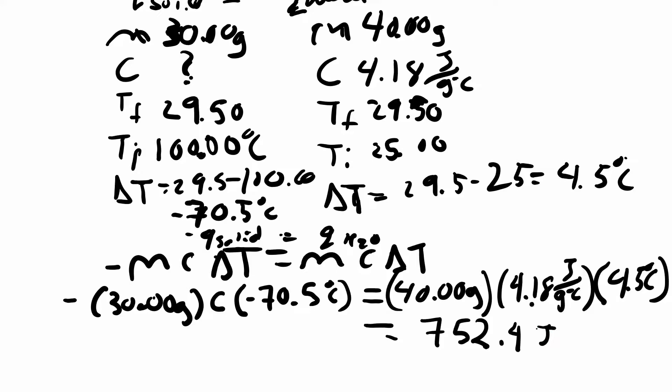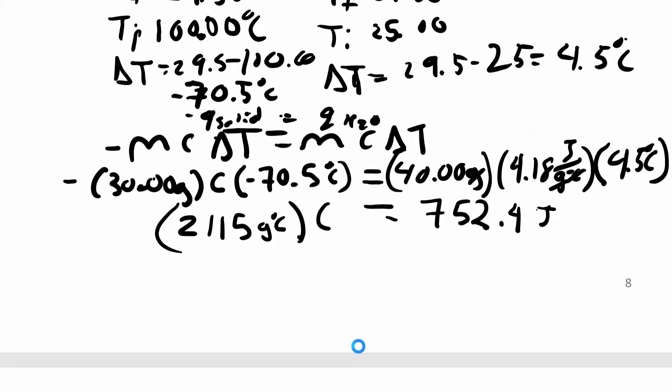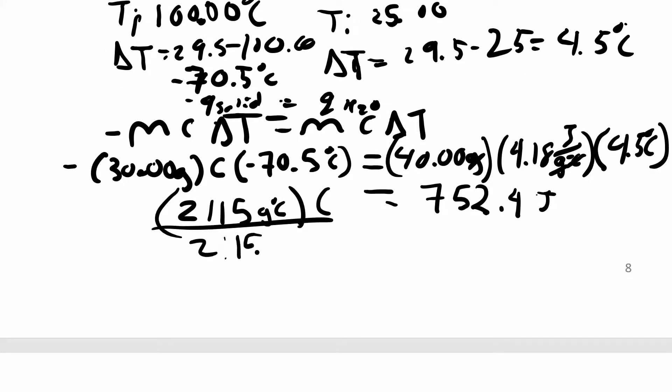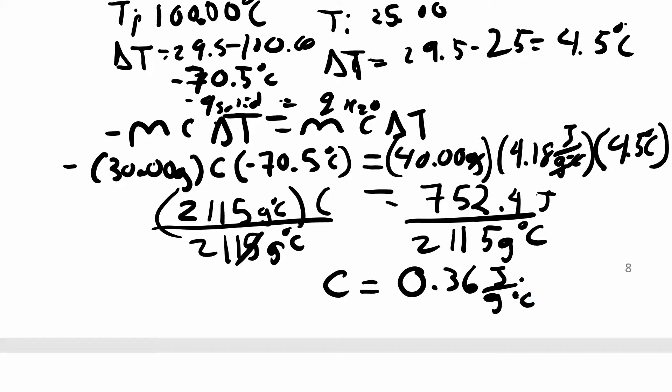Looking at my units, my grams cancel, my celsius cancels. And over here on this side I have 2,115, and my units are grams degree celsius, and then my c is what I'm looking for. To solve for c, I'm just going to divide both sides by the 2,115 grams degree c. I end up with that c—specific heat capacity is about 0.36 joules per gram degree c, depending on how many sig figs. I think I cut off some sig figs.